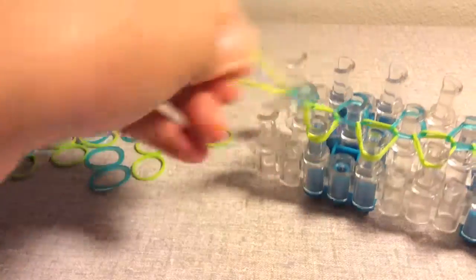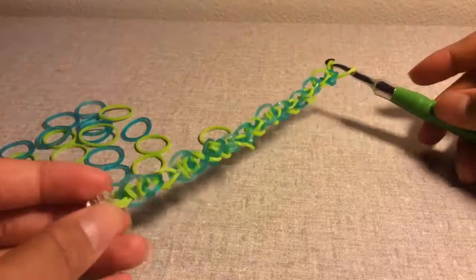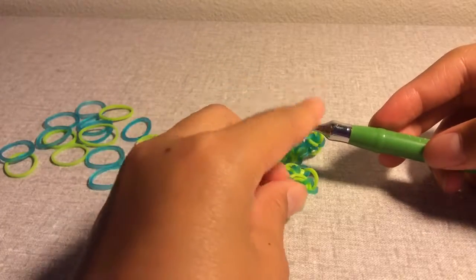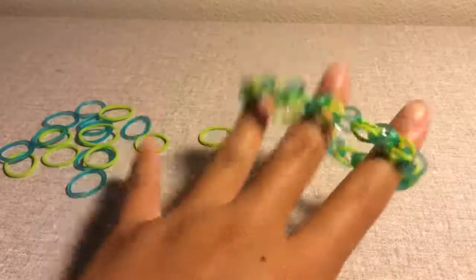So now you want to just take your bracelet off your loom. So this is what my bracelet looks like. So now you want to take the hook here and just hook it with these two rubber bands there. Now this is what my bracelet looks like.